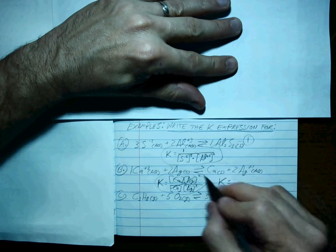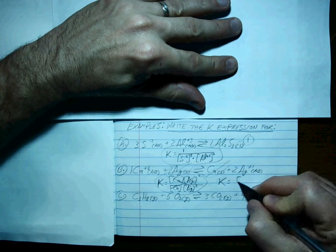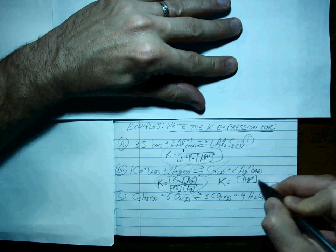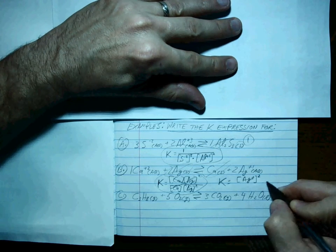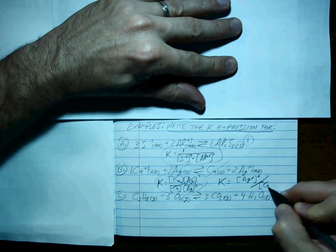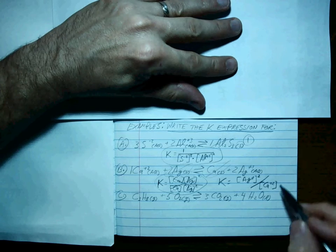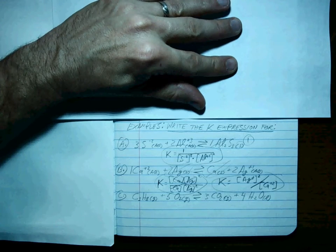Only use the ions. Products taken to the power of the coefficients divided by reactants, taking the power of those coefficients. And that's the value of K.